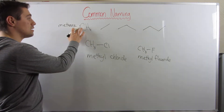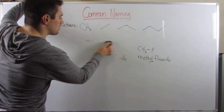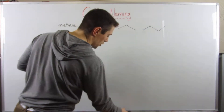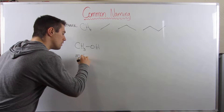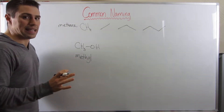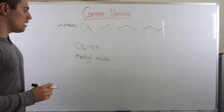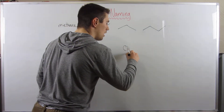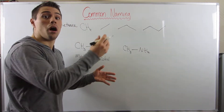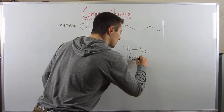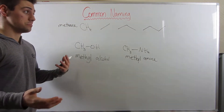Make sure you drop the -ane ending and add -yl. Now if I gave you CH3OH, that would be methyl alcohol — no -ide ending here, because it's not a halogen. You just use the name of the functional group. Similarly, if I gave you CH3NH2, that would be methyl amine — just like the example from the functional group video. That's pretty much all there is to it.